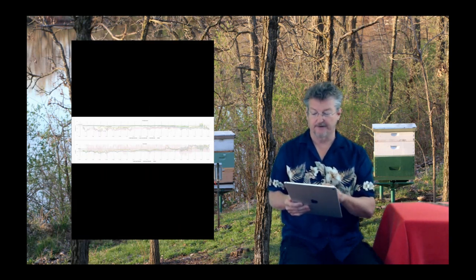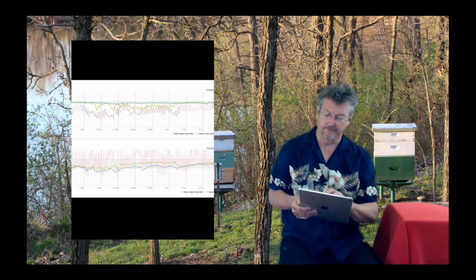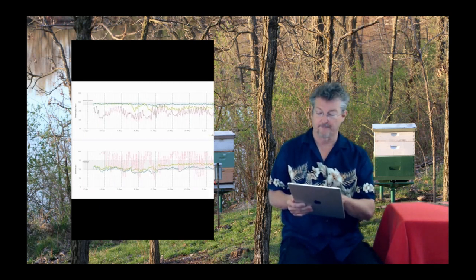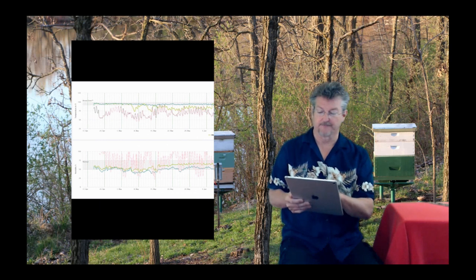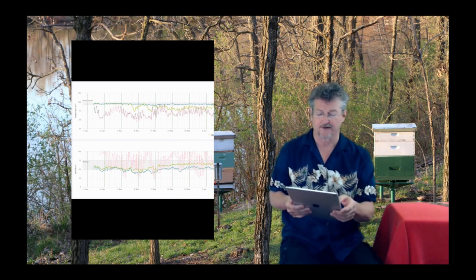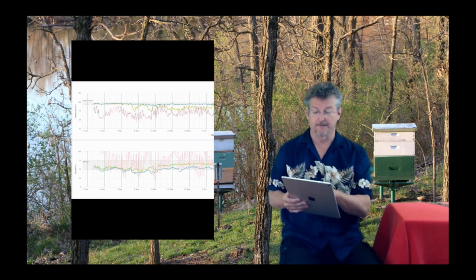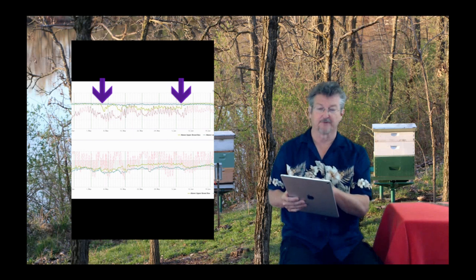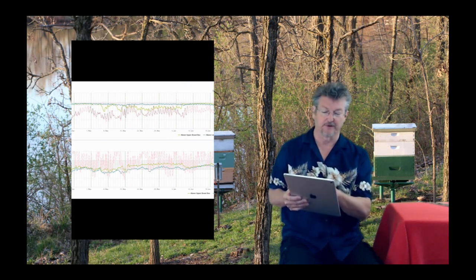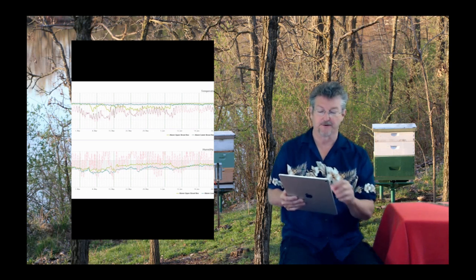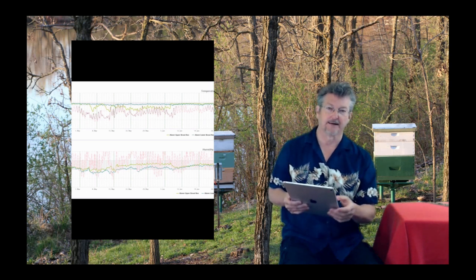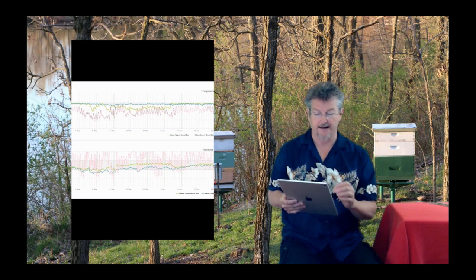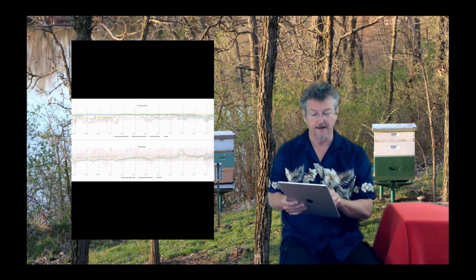The last example I'll show you is one where it was going along fine, but then the queen got distressed, got stressed somehow, in early May. We see the upper brood box sort of fall off regulation, so she's only laying in the lower brood box. But then in early June, she started laying again in both the lower and upper brood boxes, and it went on fine.